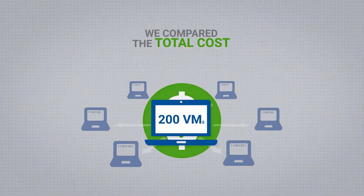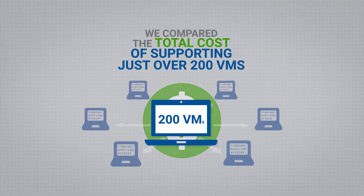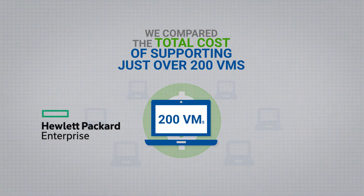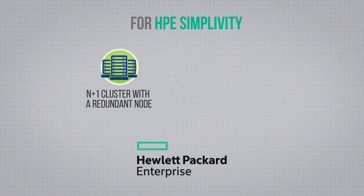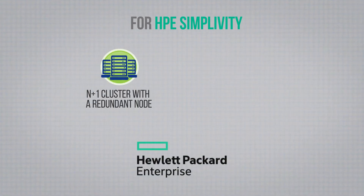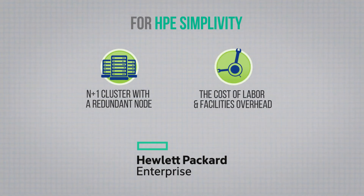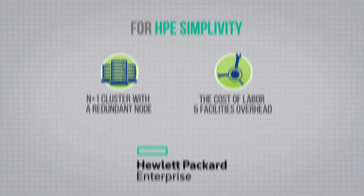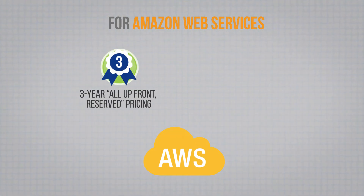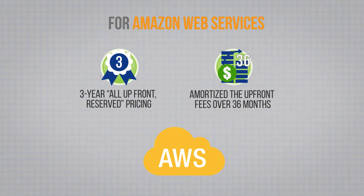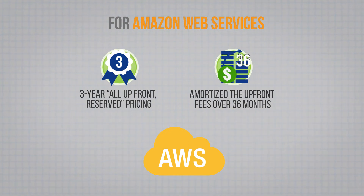For this model, we compared the total cost of supporting just over 200 VMs on HPE SimpliVity with the cost of running the same number of VMs in AWS. For HPE SimpliVity, this was an N+1 cluster that included a redundant node for high availability, plus the cost of labor and facilities overhead. For AWS, we chose their three-year all-up-front reserve pricing and amortized these upfront fees over 36 months. This was the lowest cost option for AWS and the one that most closely resembled a traditional infrastructure purchase.